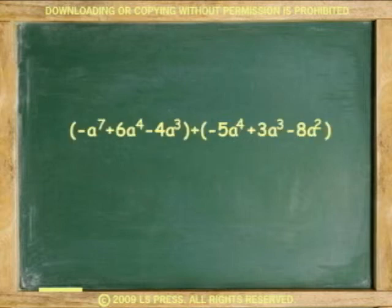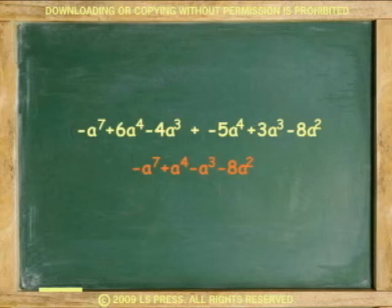Another example. Remove parentheses. Combine coefficients according to base and exponent. Answer: negative a to the seventh plus a to the fourth minus a cubed minus 8a squared.